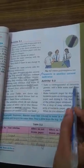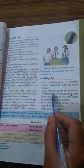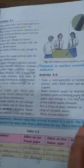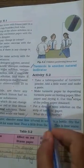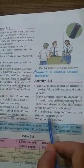Take a tablespoon of turmeric powder, add a little water and make a paste. Make turmeric paper by depositing turmeric paste on blotting paper, filter paper and drying it. Cut thin strips of the yellow paper obtained. Put a drop of soap solution on that strip of turmeric paper.